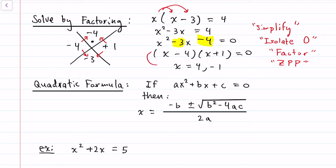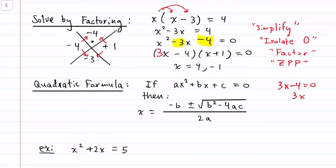As for how the zero product property works, we basically just change the signs of the numbers next to x. So if that factor equals zero, x would be four, and if this one equals zero, x would be negative one. If you had a number in front of x — say a three — then with three x minus four equals zero, you'd add four to the other side then divide by three. So not only do we change the sign, we also divide by any number in front of x.